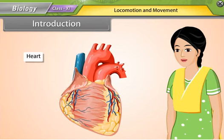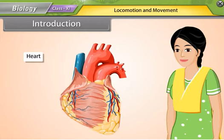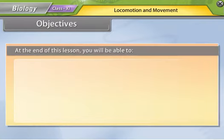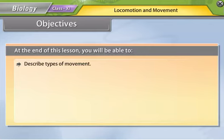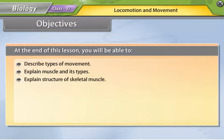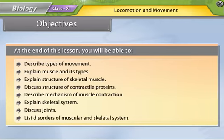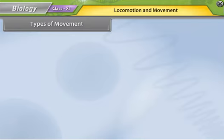At the end of this lesson you will be able to: describe types of movement, explain muscle and its types, explain structure of skeletal muscles, discuss structure of contractile proteins, describe mechanism of muscle contraction, explain skeletal system, discuss joints, and list disorders of muscular and skeletal system.